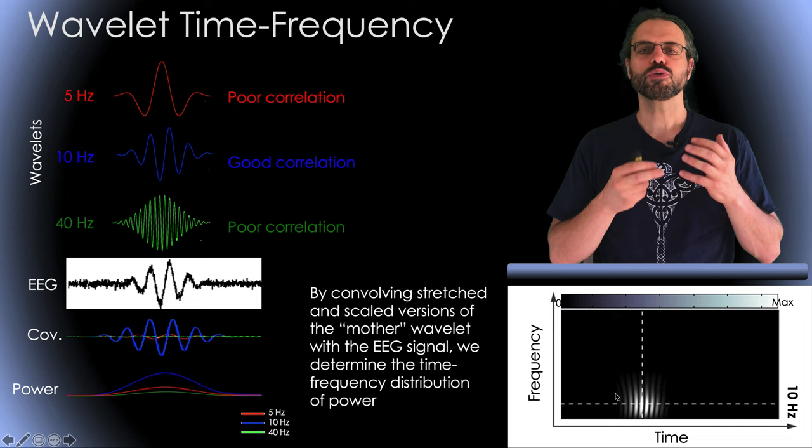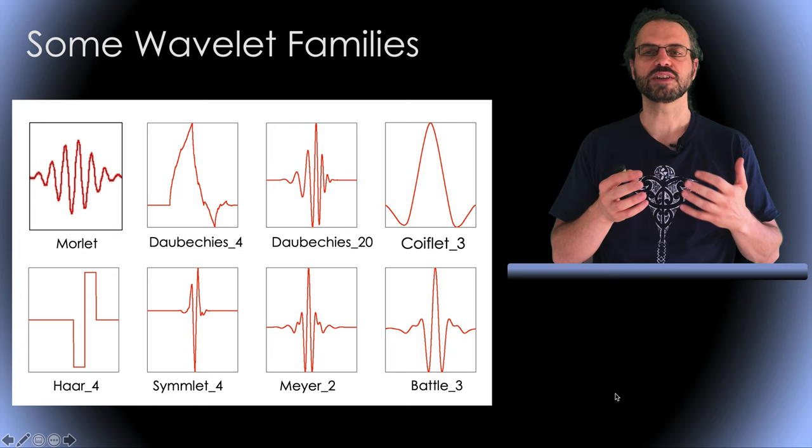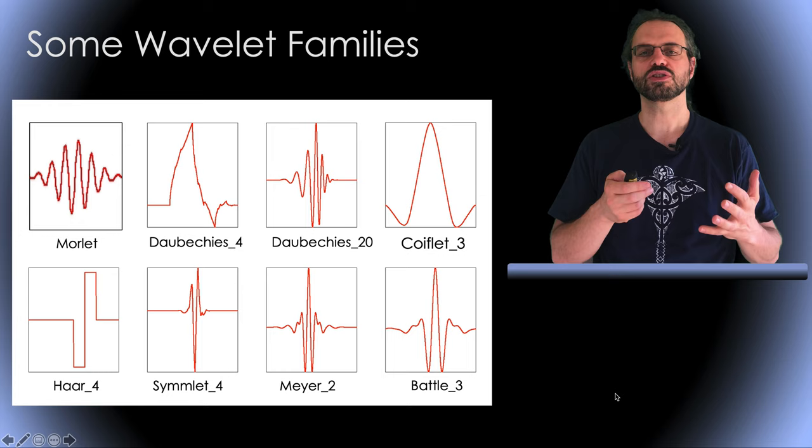Another way of representing this is using a 2D time frequency plot as shown here. Note that different wavelets may be better adapted for different kinds of EEG signal. In general, in EEG, we use a Morlet wavelet, which is a sinusoid times a Gaussian.